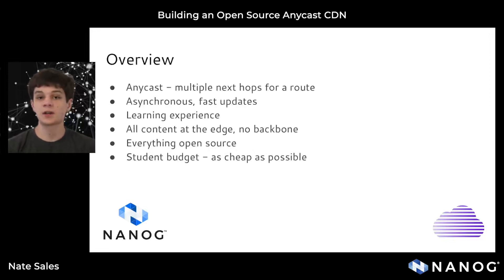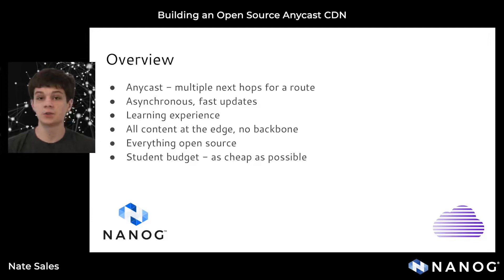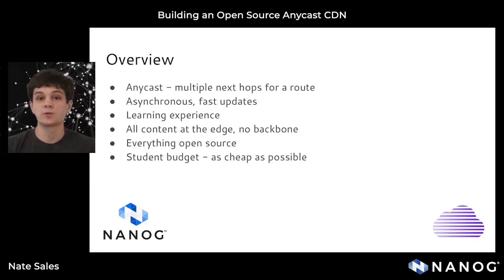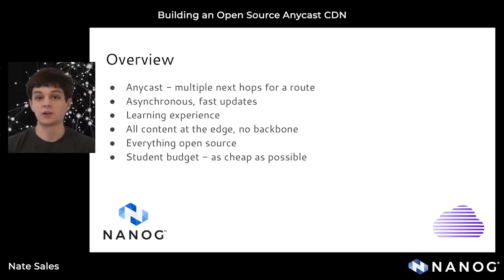The overview of the project is that I wanted to play with Anycast — routing with multiple next hops — and build a CDN that uses Anycast as the routing methodology to deliver traffic efficiently. One of the goals was having fast and asynchronous updates, so if multiple people wanted to change data, that would be possible. The main goal was a learning experience. A key technical aspect was keeping all content directly at the edge — no backbone, no IGP, no backhaul traffic — making the network simpler.